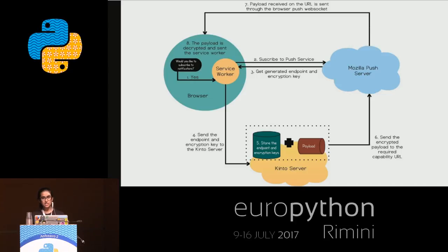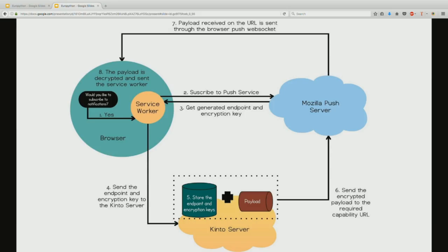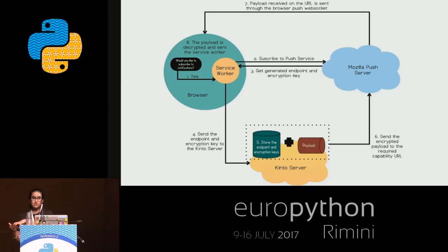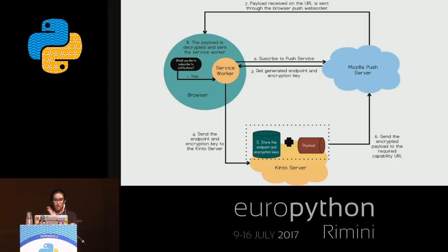There are two ways information can be accessed over the internet. First is through a password or token, where the user who has access has the password or token. The other way is that information is available on obscured URLs, and only those who should have access know those URLs. Such URLs are called capability URLs. So the push server responds back with a capability URL and an encryption key.